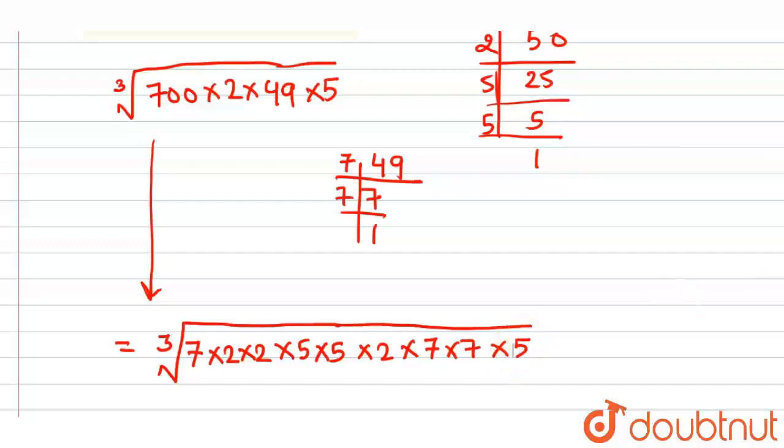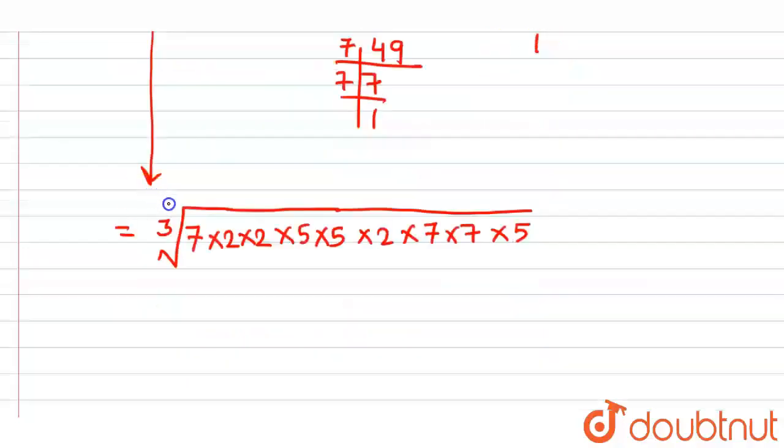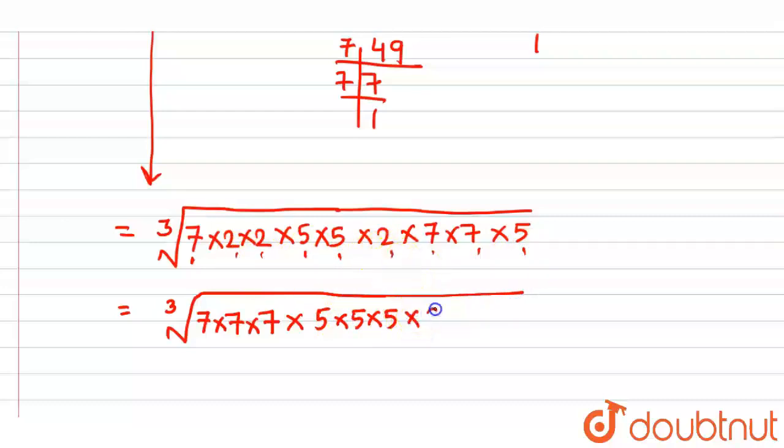So now we would rearrange the terms. So this 7 and this 7, so it is 3 times 7, so 7 × 7 × 7. So this 5, this 5, and this 5, so 3 times 5, so 5 × 5 × 5. And this 2, this 2, and this 2, so 3 times 2, so 2 × 2 × 2.